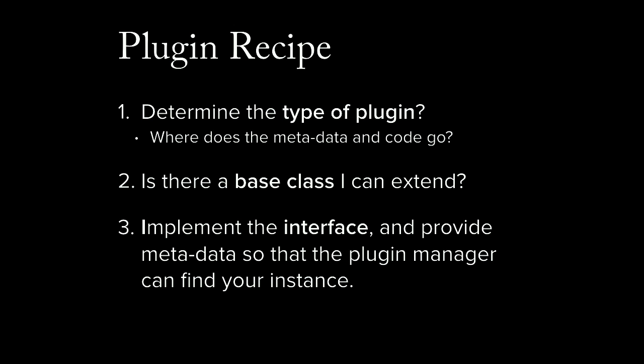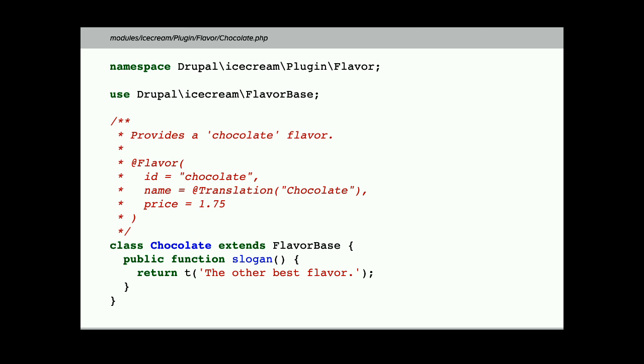I highly recommend extending the base class when it exists. Finally, depending on the plugin type, there will also be an interface — required for every plugin type. The interface tells you all the different methods you could implement and what they do, instead of having to search api.drupal.org for hook_block_ and wait for the list to populate. This is a simple example of what a plugin might look like: a class extending a base class that provides new flavors of ice cream, living in a namespace determined by the plugin type, with metadata in an annotation at the top.